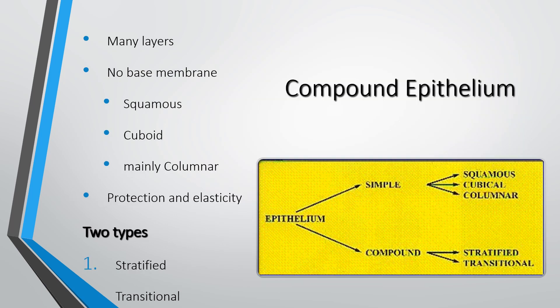Now we move on to the second type of epithelium: compound epithelium. These are many layered and don't have a membranous base, so they can stack on top of one another. They are mainly columnar. The job of compound epithelium is no longer lining and covering organs — it's about protection and elasticity. There are two types: stratified, which tends to be more protective, and transitional, which is more elastic and shape-changing.